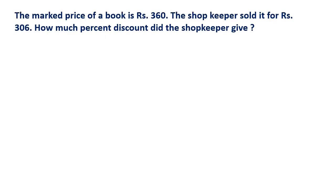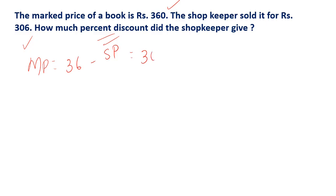Let us look at an example. The marked price of a book is 360 rupees — it could be a class guide or a large book. The shopkeeper sold it for 306 rupees. How much percent discount did the shopkeeper give? What is given: marked price is 360, selling price is 306. So the discount is 360 minus 306, which is 54 rupees. That is the discount amount. Now we are asked for the percent of discount.